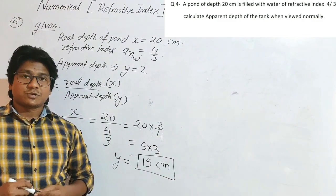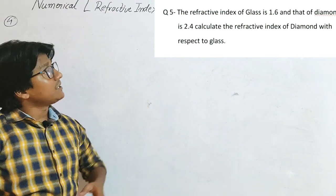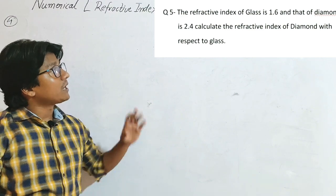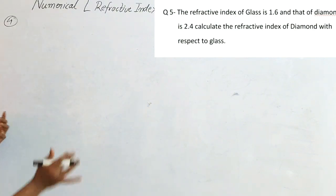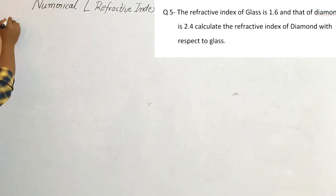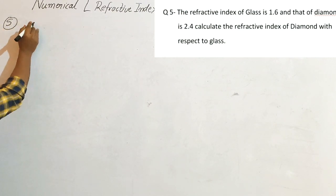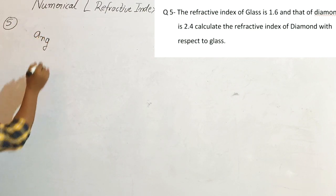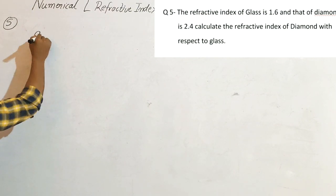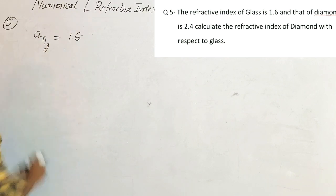Moving to the fifth question: the refractive index of glass is 1.6 and of diamond is 2.4. Calculate the refractive index of diamond with respect to glass. Given: refractive index of glass with respect to air (ang) = 1.6, and refractive index of diamond with respect to air (and) = 2.4.